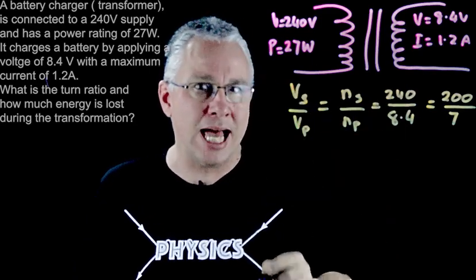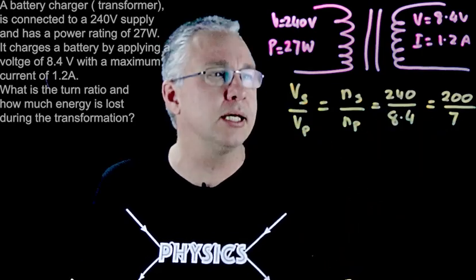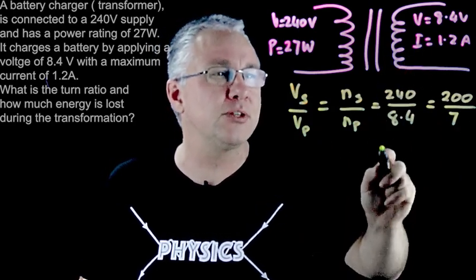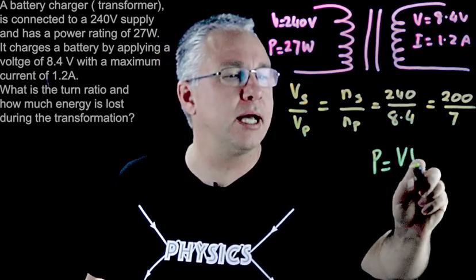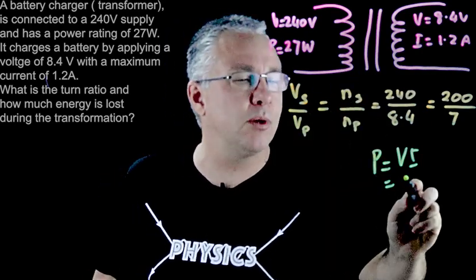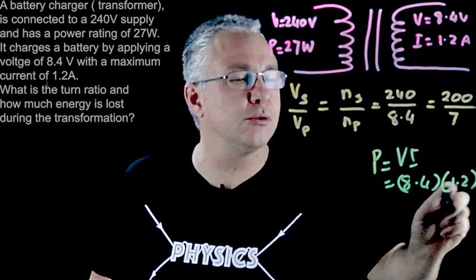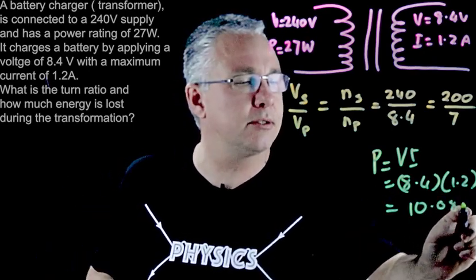So all we need to do to work that out is, well we've got 27 watts on this side, which is 27 joules per second, and we need to work out what is the power on that side. Well that's pretty straightforward, because power is equal to V times I, and we are given both values. So at the maximum current rating what we have is 8.4 multiplied by 1.2, and that gives us a value of 10.08 watts.